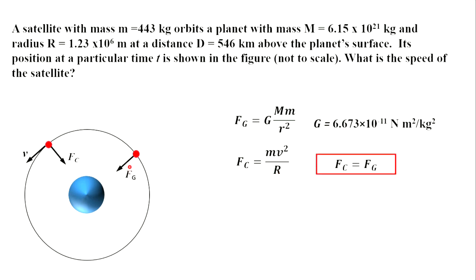If we equate the right-hand side of these two equations and cancel mass of satellite, we will have a basic equation from which we can find V.